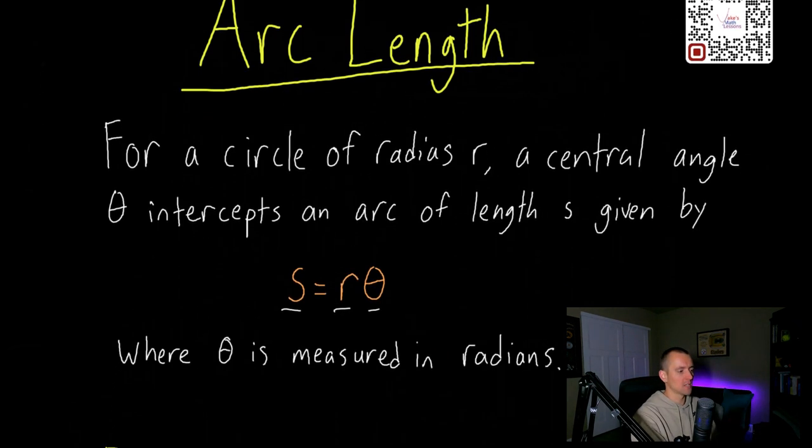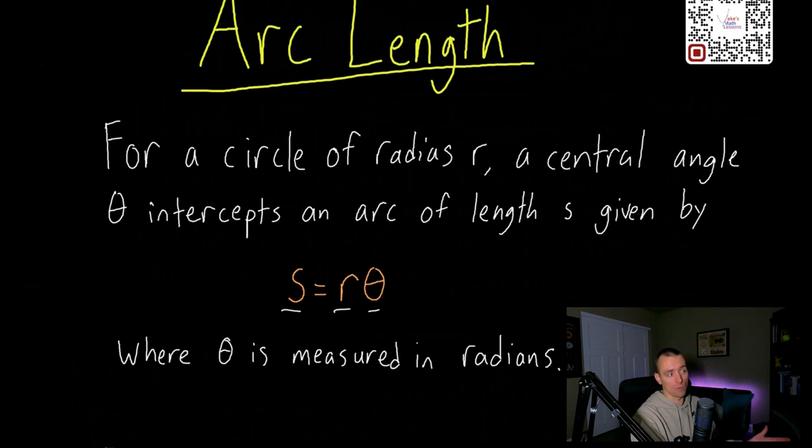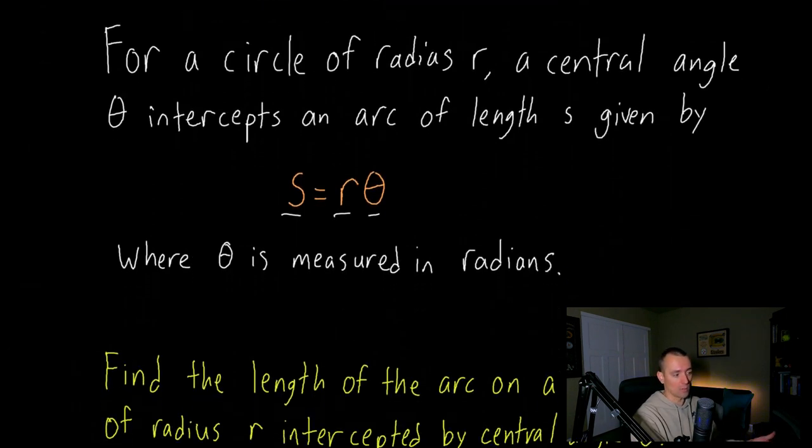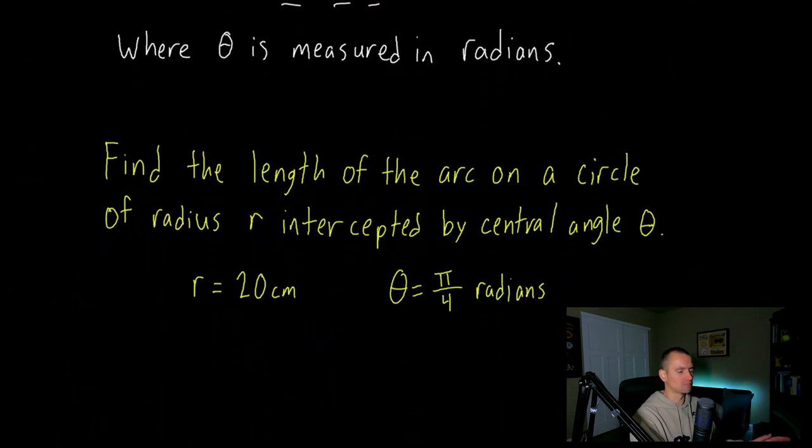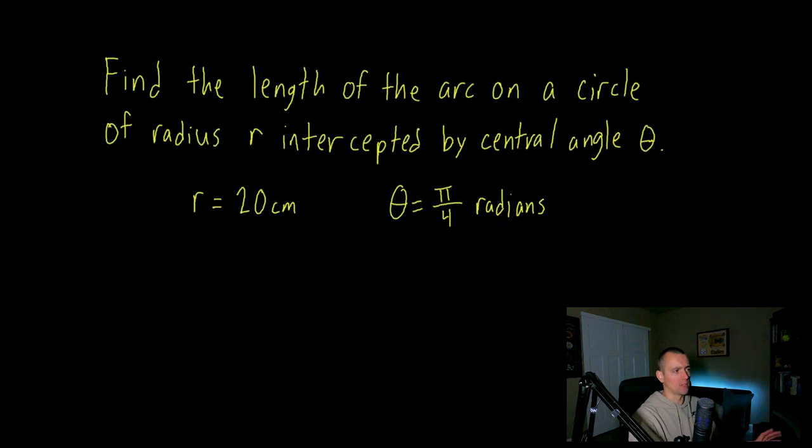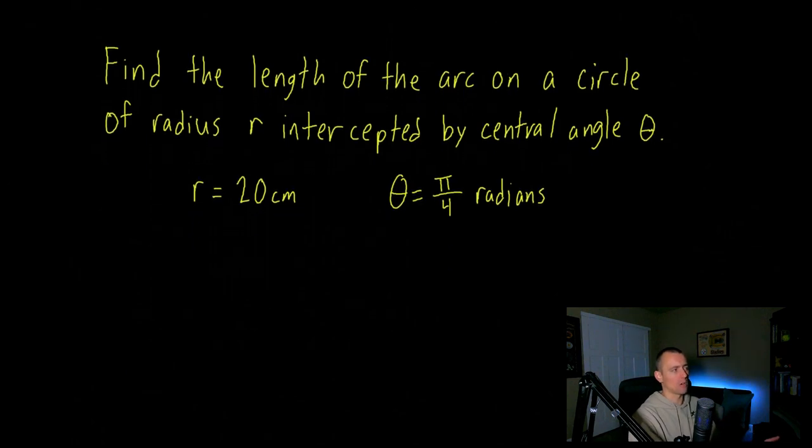Let's think about an example of how we could actually apply this, and we'll talk a bit visually about what this looks like. We want to use this formula to find the length of the arc on a circle of radius r intercepted by central angle θ, where r = 20 centimeters and θ = π/4 radians.